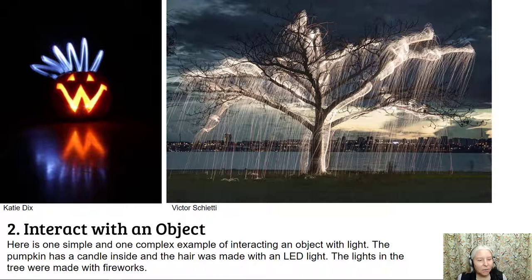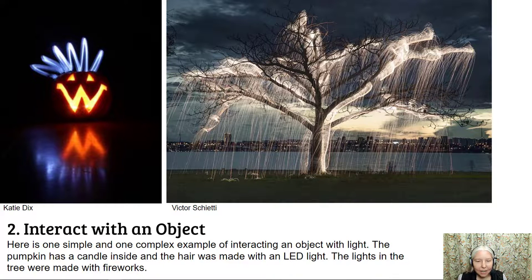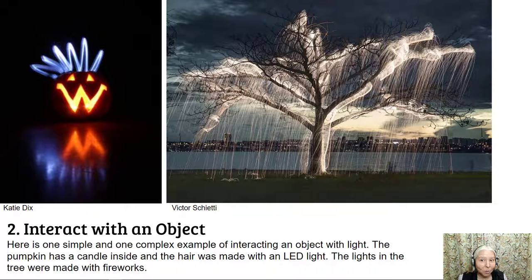Number two: interact with an object. Here is one simple and one complex example of interacting with an object using light. The pumpkin has a candle on the inside, and then someone used an LED light to draw spiky hair. Another thing I like is the reflective surface the pumpkin is on, so you can see a kind of double image. And then the tree was made with fireworks, which I'm sure took a lot of time and planning to pull that off.